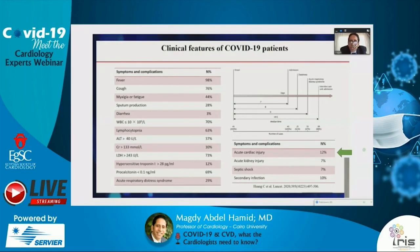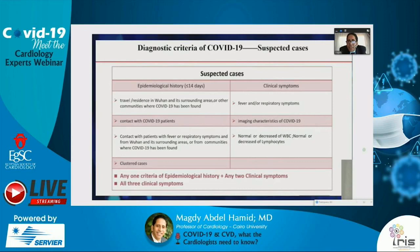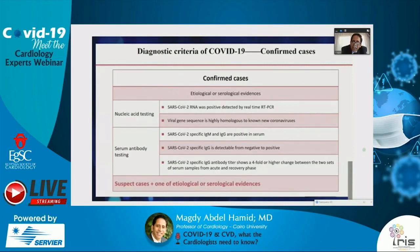The diagnostic criteria for COVID-19: suspected cases include travel to COVID-19 affected areas, contact with confirmed patients, contact with patients with fever or respiratory symptoms, or clustered cases. Clinical symptoms include fever, respiratory symptoms, and normal or decreased leucocytic count with lymphopenia. Any one epidemiological criterion plus any two clinical symptoms — or all three clinical symptoms — indicates a suspected case. Confirmed cases require suspected case criteria plus positive SARS-CoV-2 RNA by PCR or specific IgM and IgG serology.